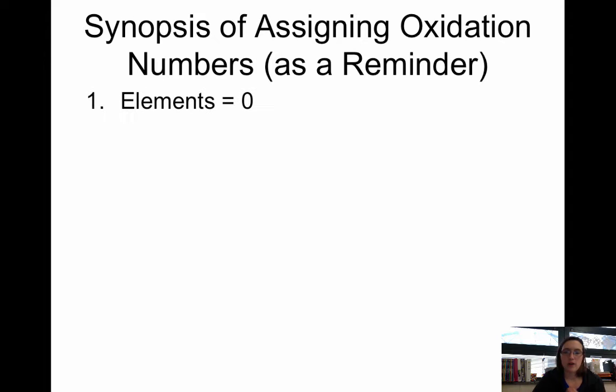Just a quick reminder, based on the stuff we've talked about in the previous videos, remember that if you have an element that is by itself, that oxidation number is zero. For example, Na, H2, Ca, any element that's by itself.